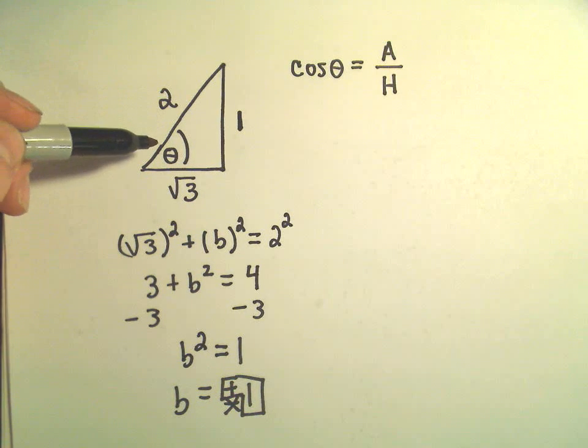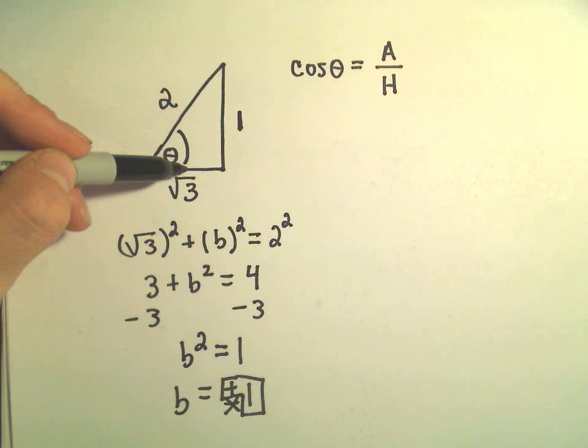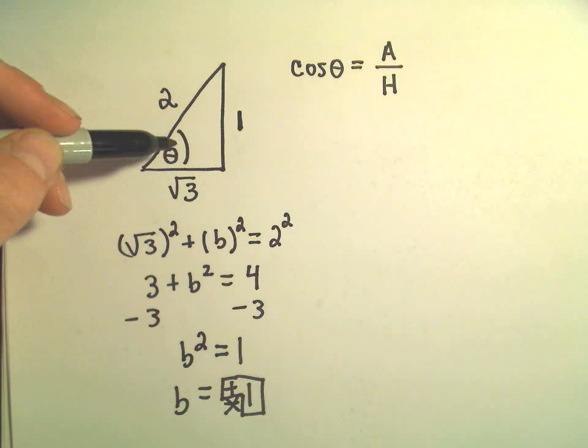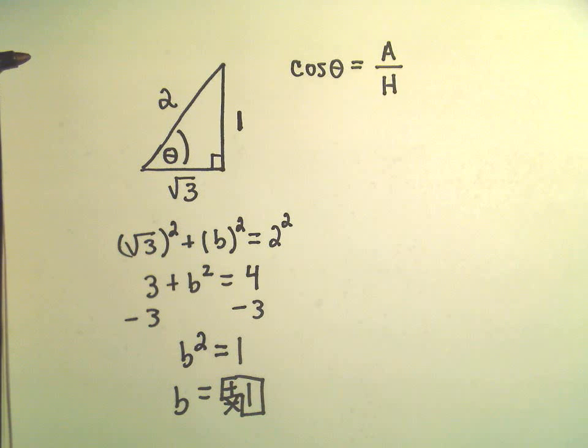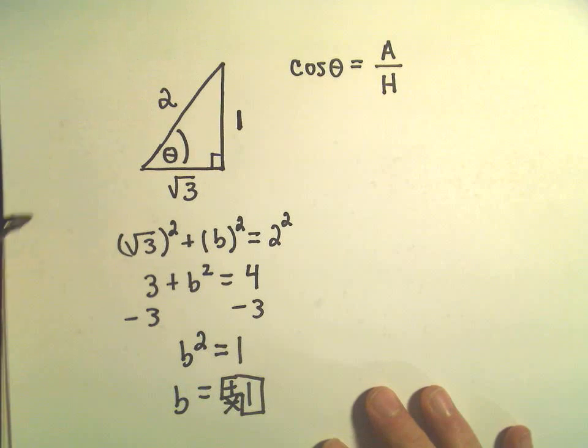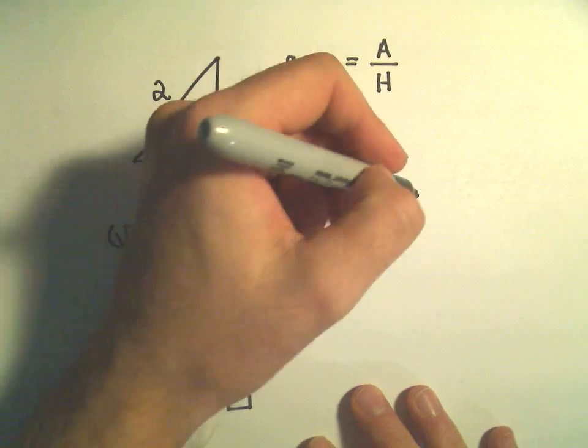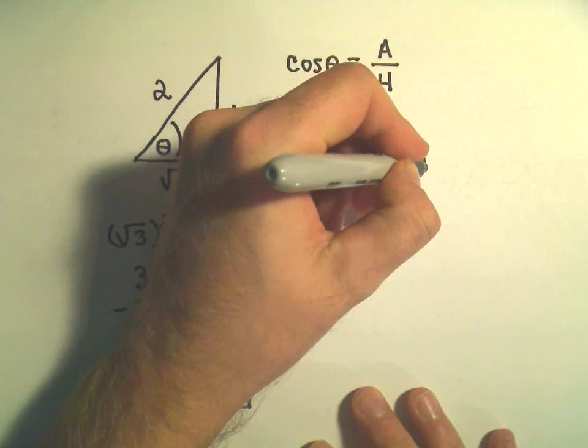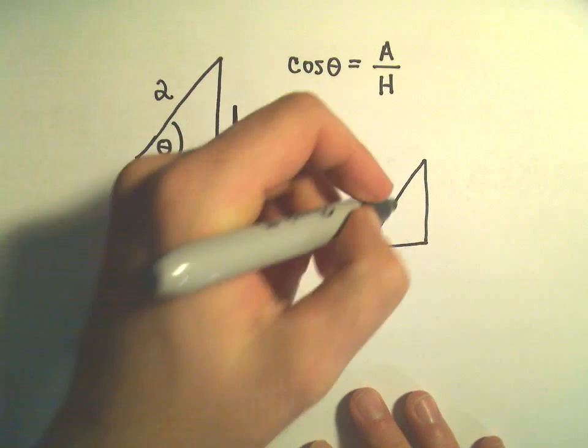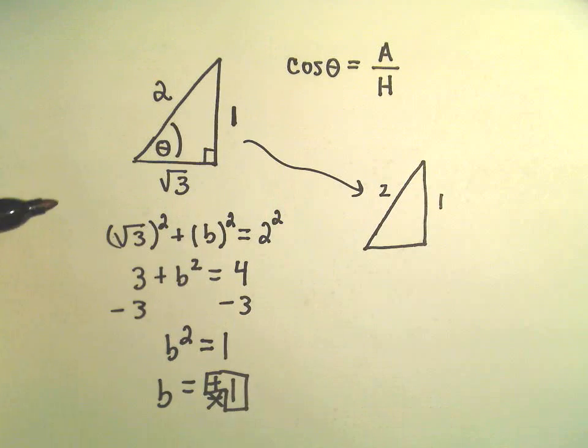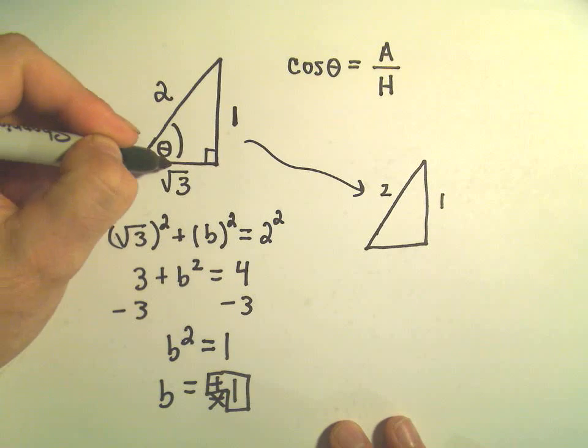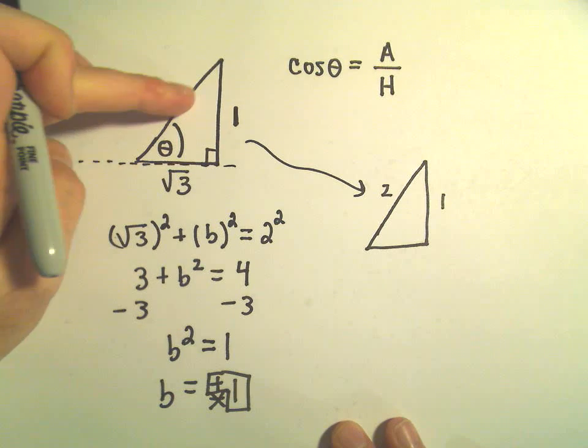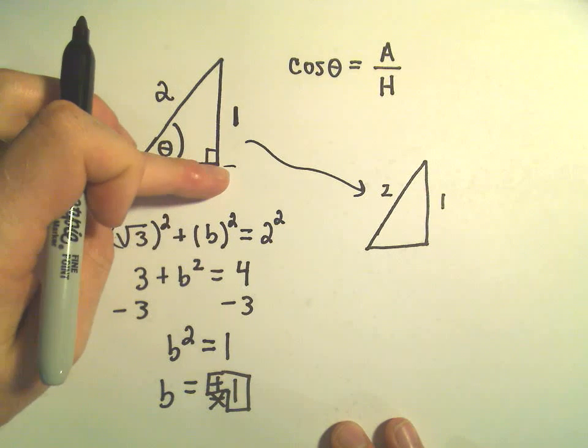So again, what we're trying to do is we're trying to figure out our angle theta. So now, we have to be a little bit clever here, and what we're going to do is, I'm going to kind of take this triangle and I'm going to reflect it. Okay, so we've got our triangle here, this has length 2, this has length 2, this has length 1, this has length square root of 3.